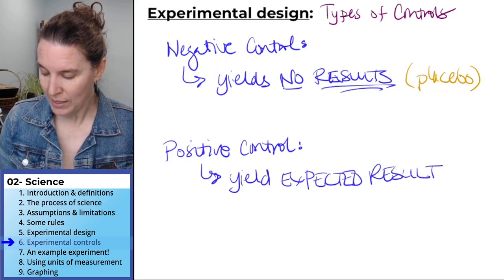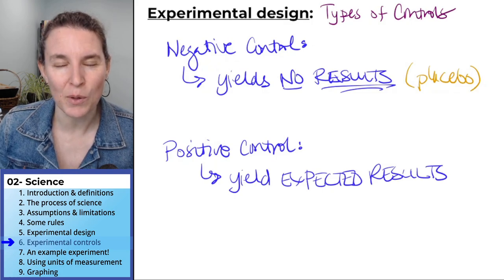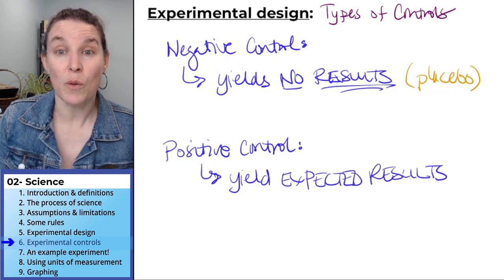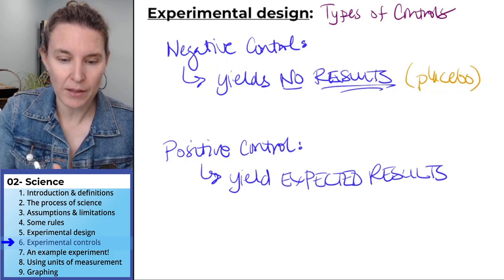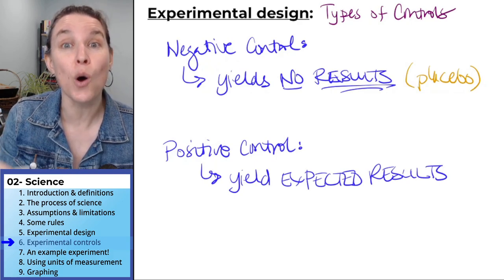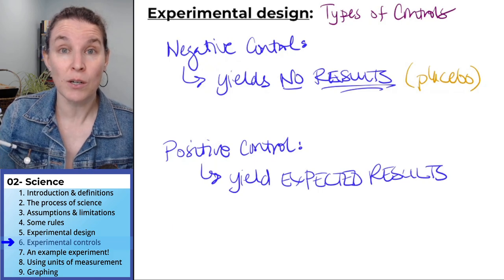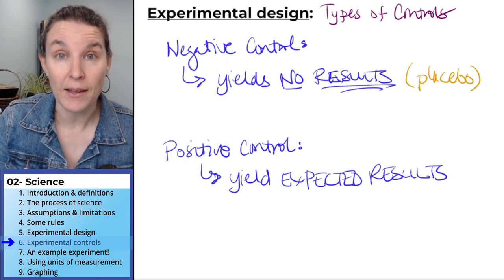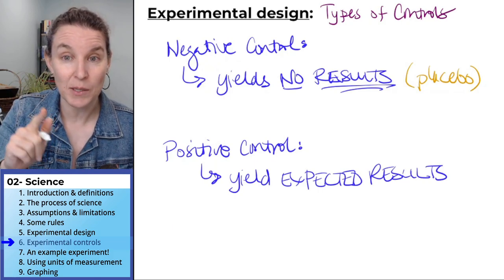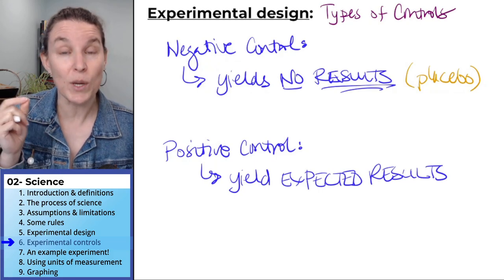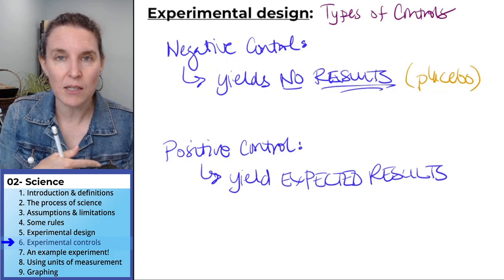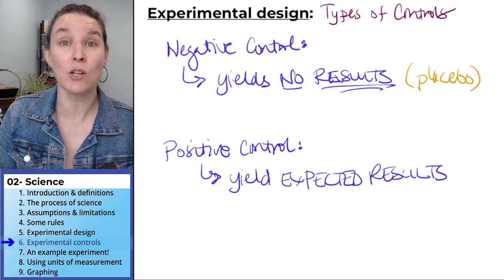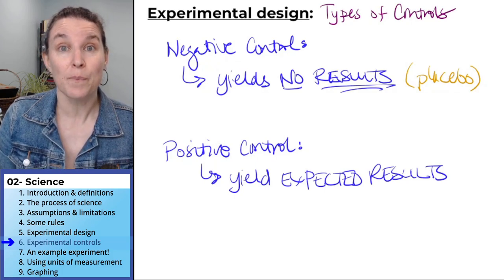So in our blood pressure example, a positive control, the expected results would be treating the patients, a pile of patients, treating them with a known blood pressure, effective blood pressure med, same size pill, same everything, but we know it works. So let's see, what would we expect to see if we had a known positive outcome?